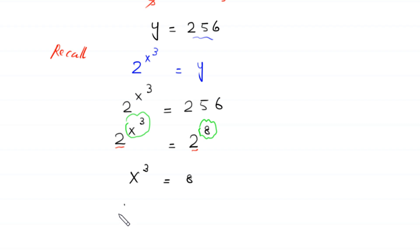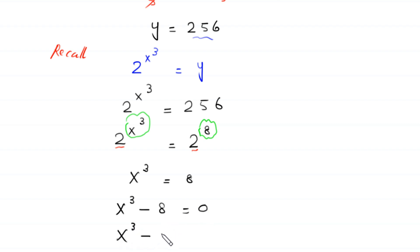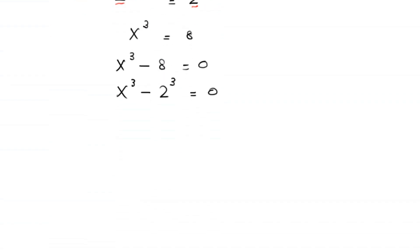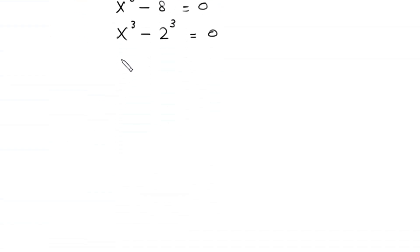Moving 8 to the left-hand side gives x³ minus 8 is equal to 0. Since 8 is the same as 2 cubed, this becomes x³ minus 2³ equals 0. We now have a difference of two cubes, so we apply the algebraic identity.